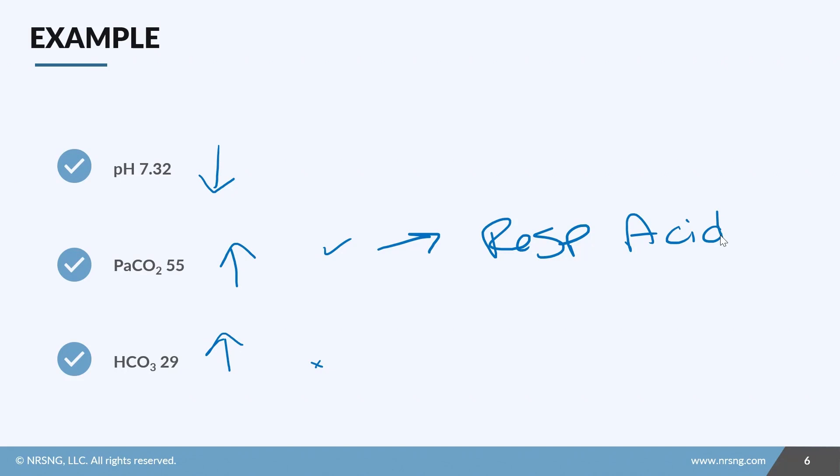call this partially compensated respiratory acidosis. So this is kind of where the arrow trick comes into it. If your CO2 and your bicarb have arrows going the same way, then you know you have compensation. All right, let's do one more.